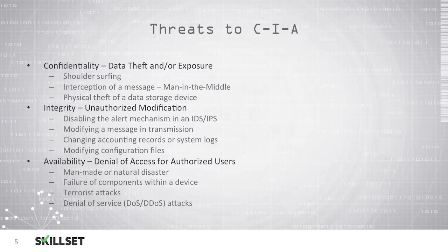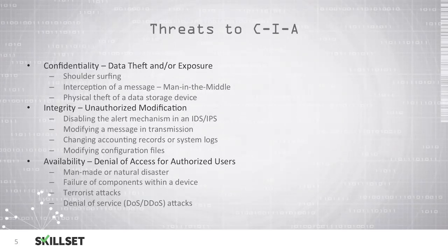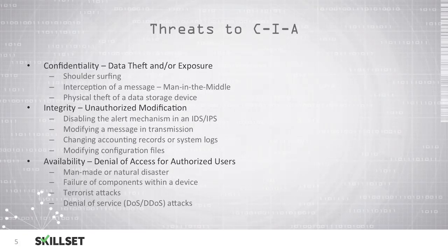When we talk about availability, we want to make sure that authorized users are able to access the system when necessary. We need to prevent both man-made and natural disasters — natural disasters like tornadoes or hurricanes, or man-made disasters like an unauthorized individual entering your data center and destroying equipment.